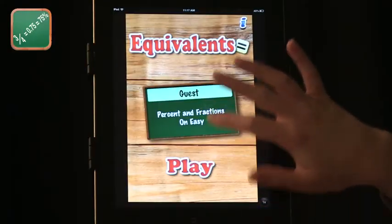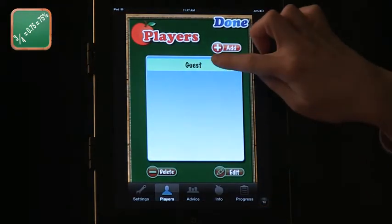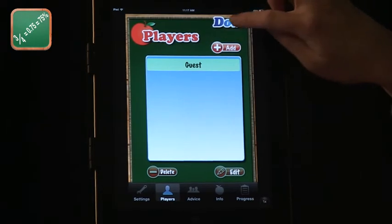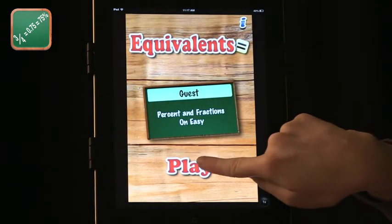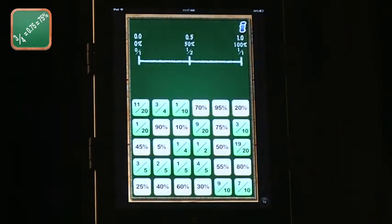The next app we're going to talk about is Equivalents. And this is from Math Tappers, which we visited a couple times before with other math apps. And Equivalents, I'm going to play as a guest. So I just click select and done. And I will select play.